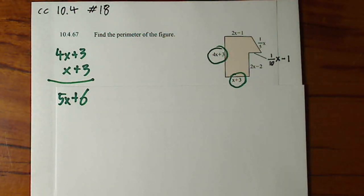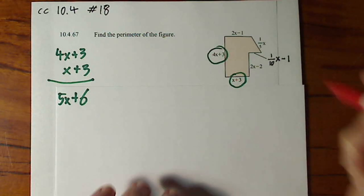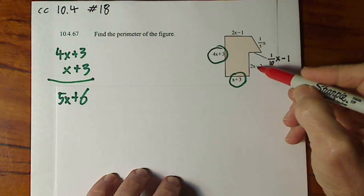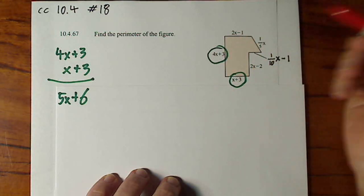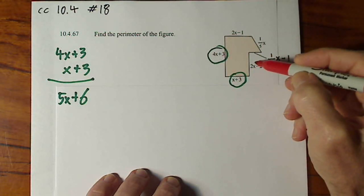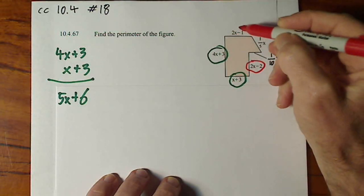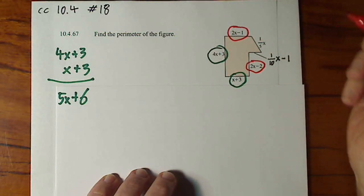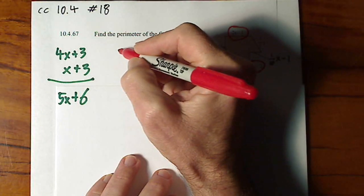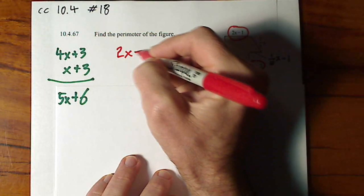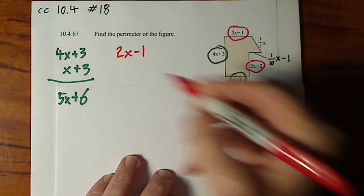Now we'll combine two more sides. Here we have a negative sign and a negative sign so it'll be easiest to combine these two. Alright, so that's 2x minus 1 and 2x minus 2.